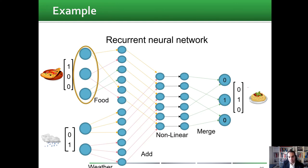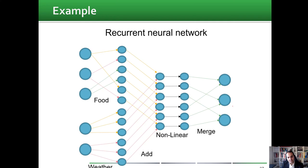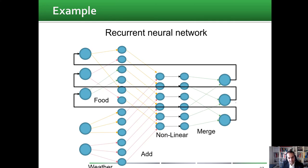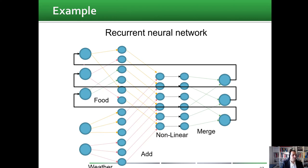For the next iteration, the output of this step becomes the input to our model. For tomorrow, we check the weather, and the output of today — pasta — becomes the new input to our model. Then we make a decision for tomorrow's meal. This was a simple example showing how a recurrent neural network makes decisions.